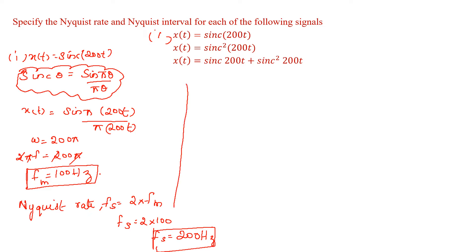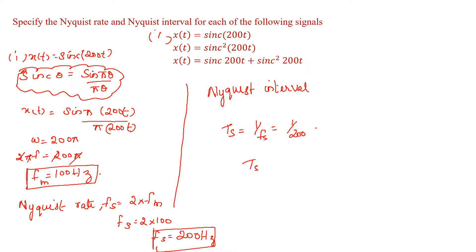The Nyquist interval is given by Ts = 1/fs = 1/200, so Ts = 5 milliseconds. That is the answer to the first question.